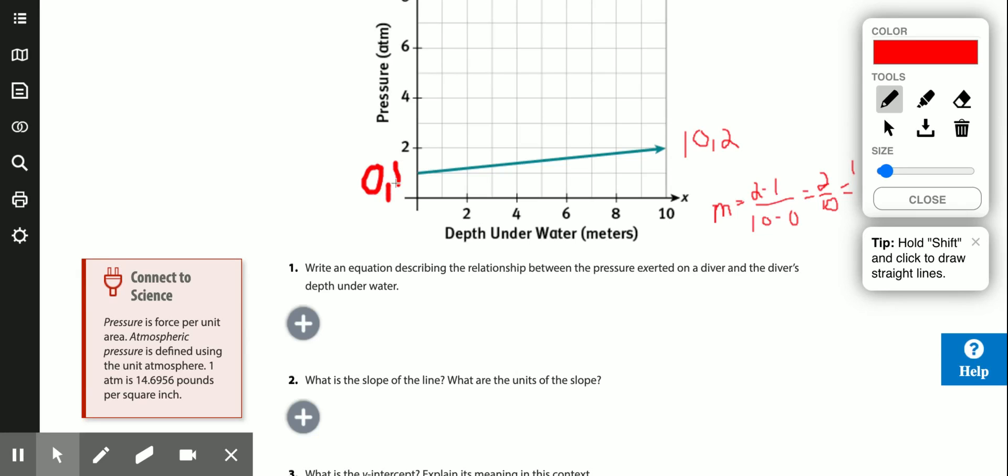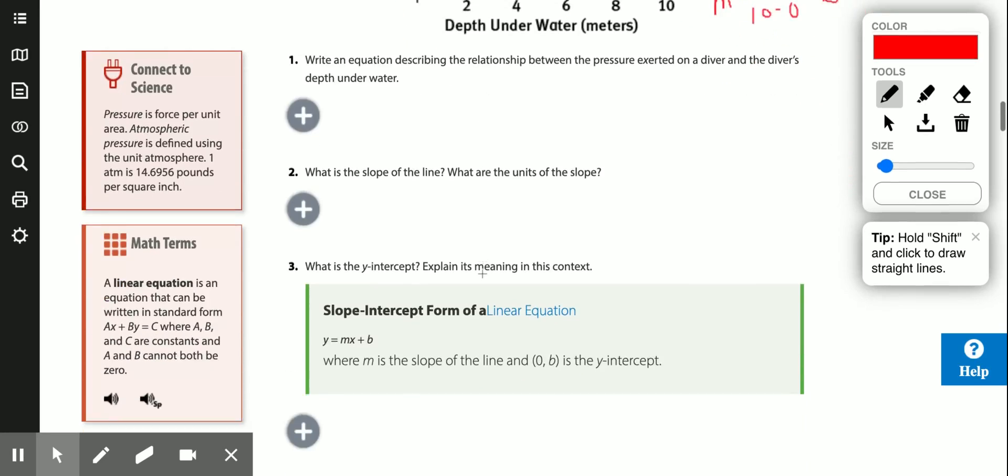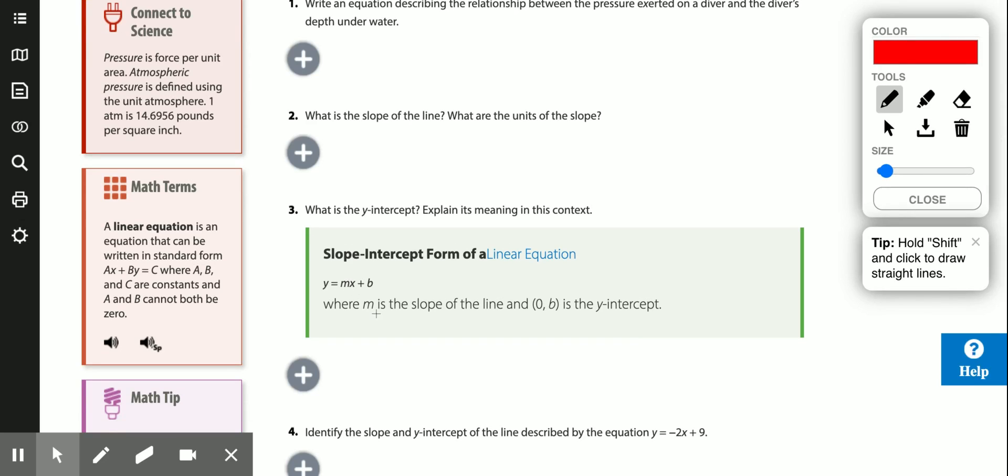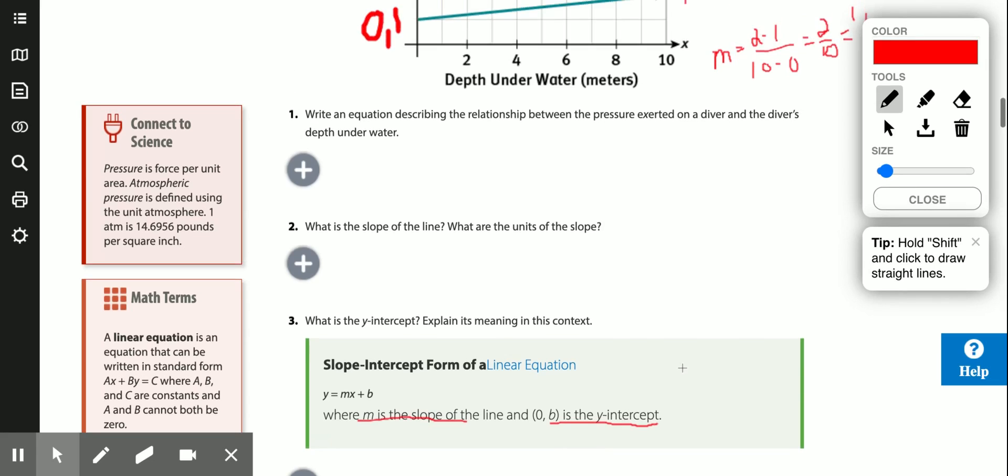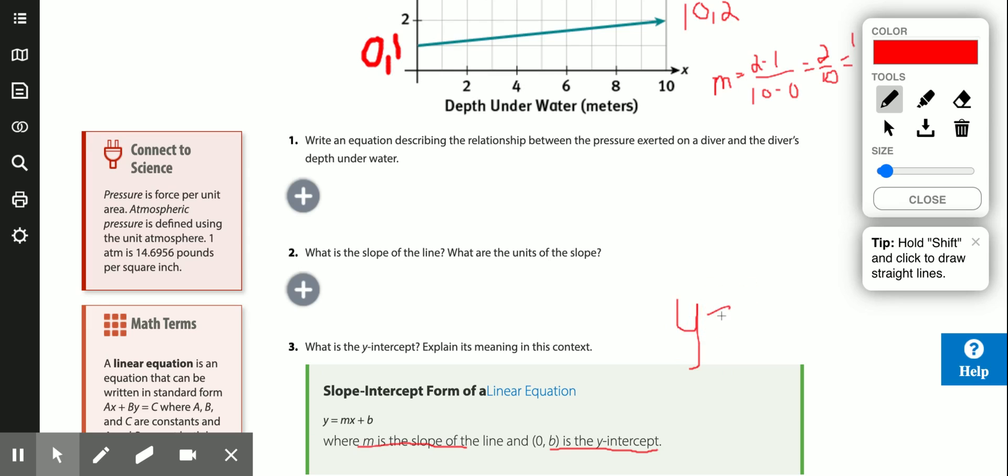And we said the y-intercept was (0, 1). So if I want to put it into slope-intercept form, m is going to be the slope of the line, and b is the y-intercept. So if I want to write the equation in slope-intercept form, I'll say y equals 1/5 x plus the y-intercept, which is (0, 1), which is 1. y equals 1/5 x plus 1.